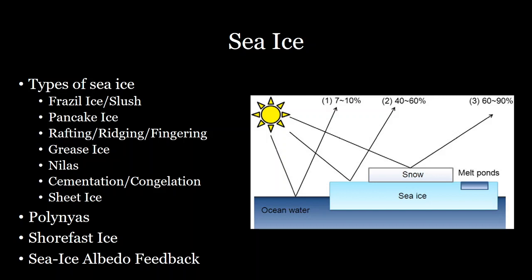An important aspect of sea ice is the sea ice albedo feedback. Ice has a very high albedo — it reflects 60 to 90% of light if it's snow-covered, or 40 to 60% if it's not snow-covered. Because it reflects so much sunlight, it cools the area around it.